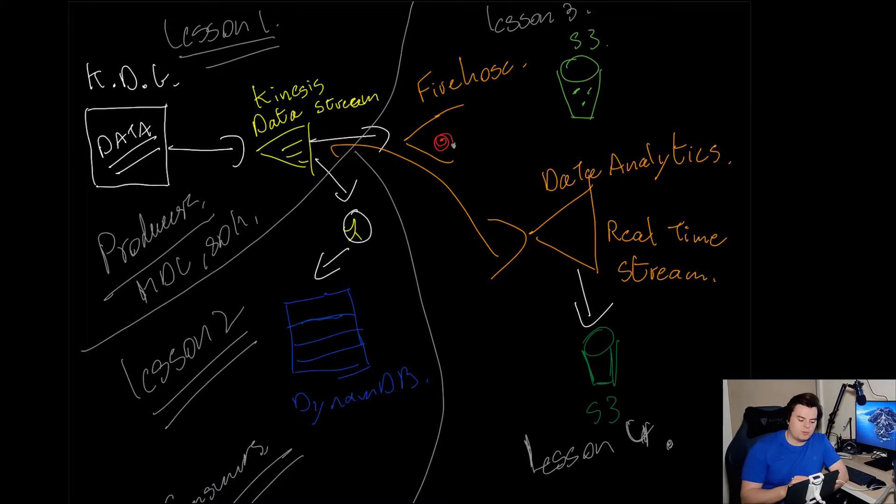Theory-wise, we'll cover what a data stream is and we'll look at the producers. We're going to look at the Kinesis producer library and the Kinesis SDK, and we'll look at shards and how much data you can pump onto a stream. If that doesn't make any sense right now, don't worry about it, we'll cover it as we go.